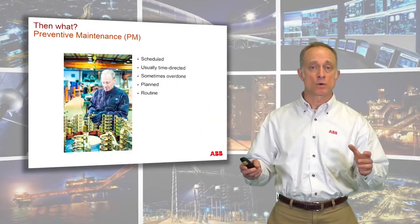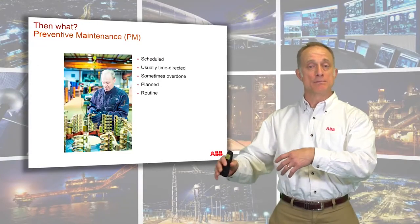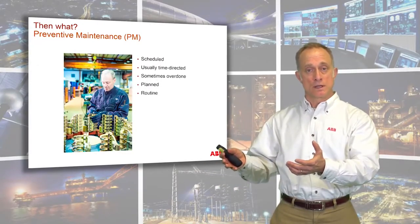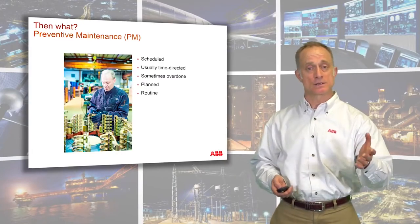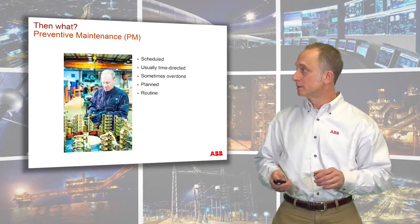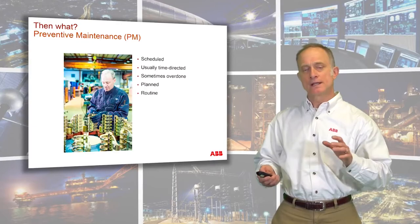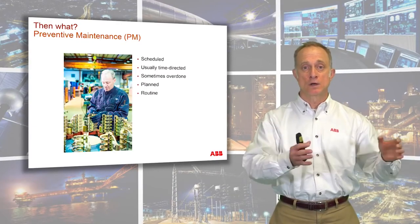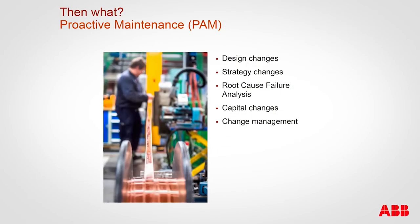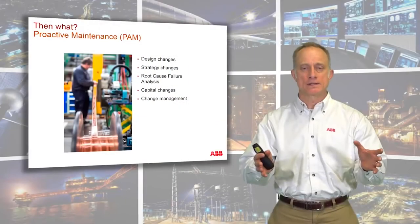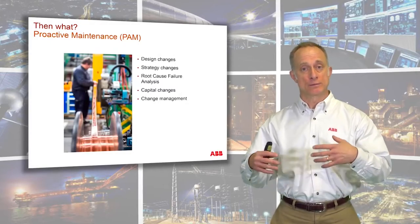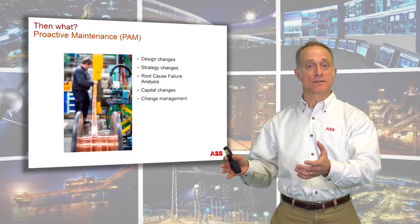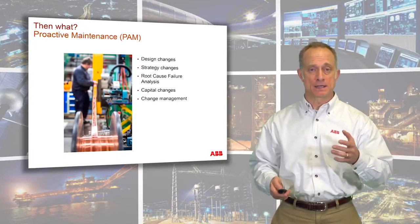Preventive maintenance means addressing something that might break before it breaks — a step ahead of the game. But as noted, it's possible to do too much. It's usually time-directed — for example, every six weeks we lubricate a piece of machinery. Proactive maintenance is the notion of looking at a production line or piece of equipment even before it's put into operation and making sure it's easy to access and maintain. When building a new plant or line, ease of maintenance can be a criterion for selecting new equipment.